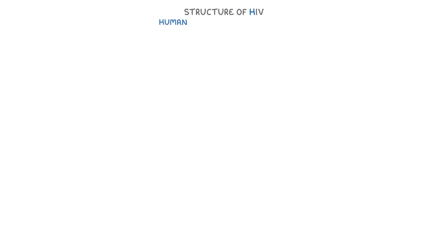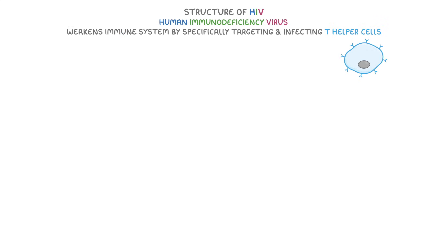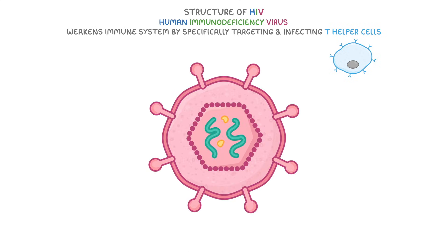Starting with the structure of HIV — HIV stands for Human Immunodeficiency Virus. It's a virus that weakens the immune system by specifically targeting and infecting T helper cells. Structurally, HIV includes several key components.